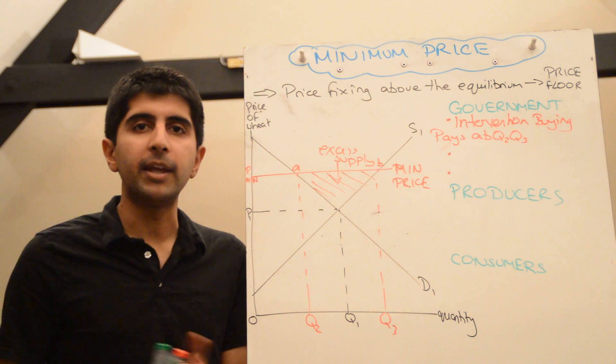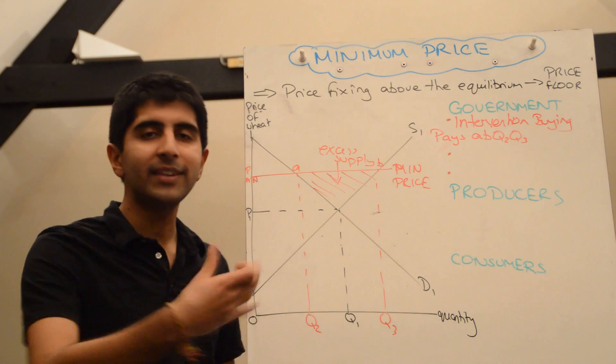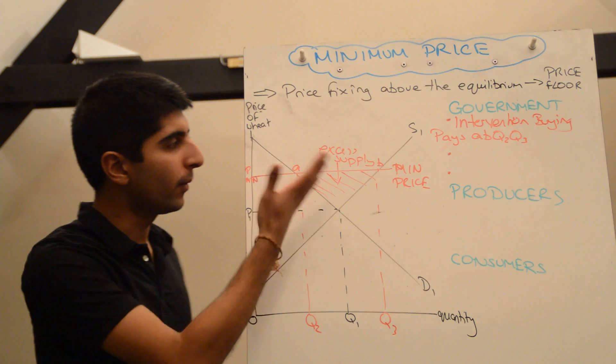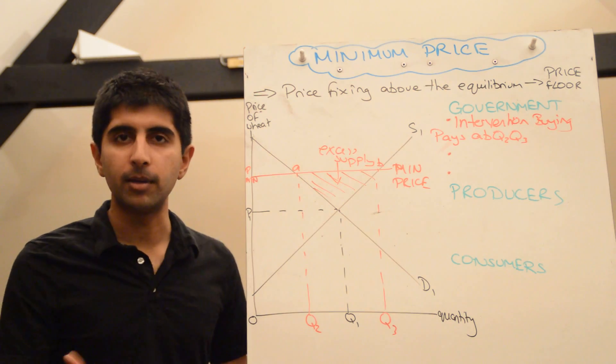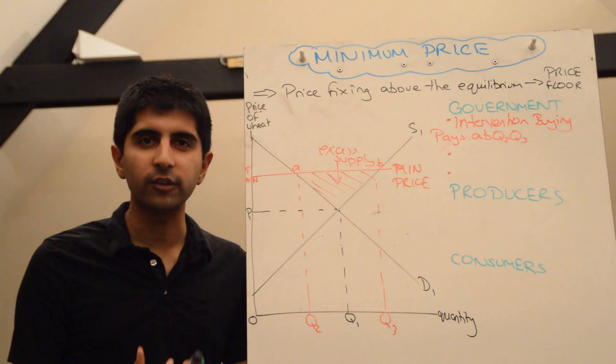And the third option is to dump it. By dumping, I mean dump it abroad. Sell it in foreign markets at a lower price than PMIN, than the minimum price. The problem with that is that foreign countries will know what's going on.